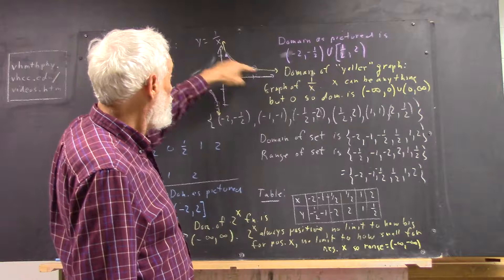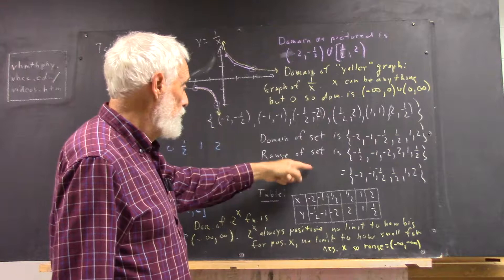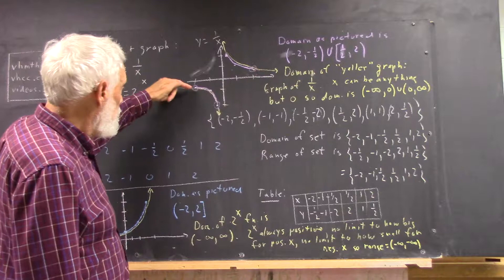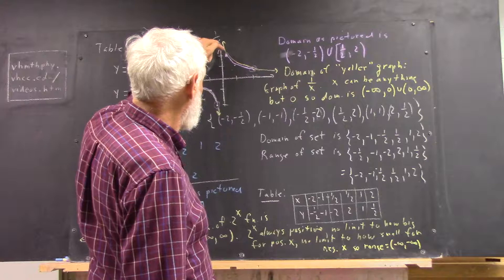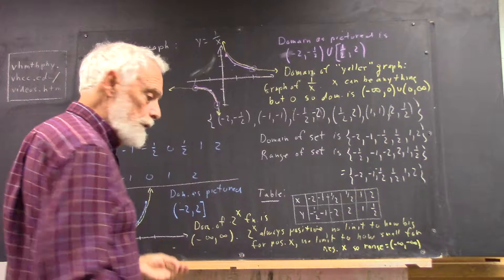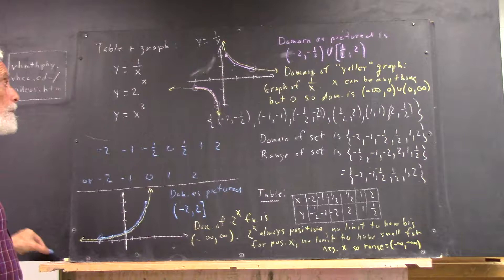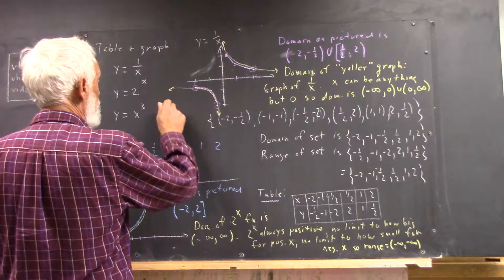Now, that would be the range of the yellow graph. The range of the set that we already saw, and we didn't really mention the range of the purple graph, but it would be from what? It would be from negative 1 half down to negative 2, not including either of those numbers, and from 2 down to 1 half, including the 2 but not the 1 half.